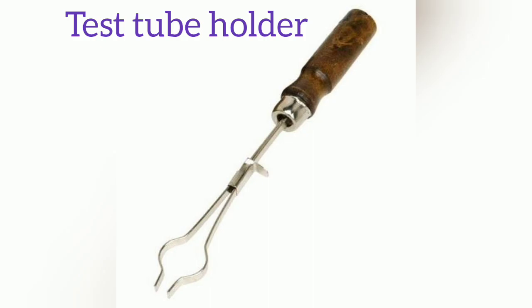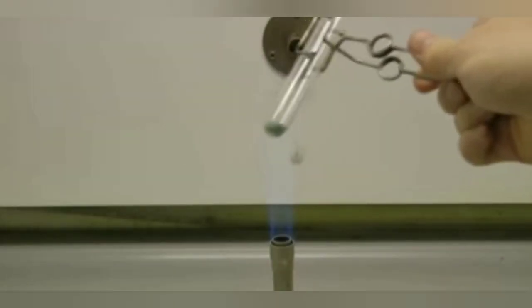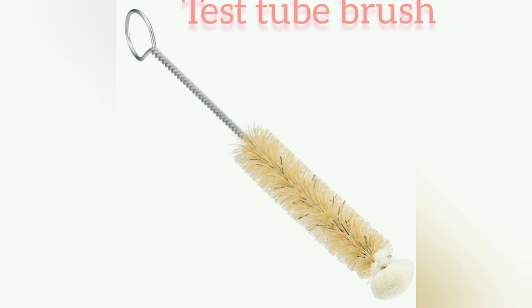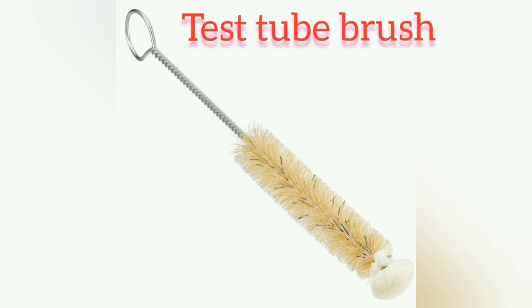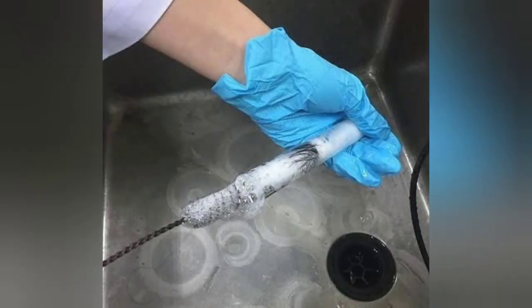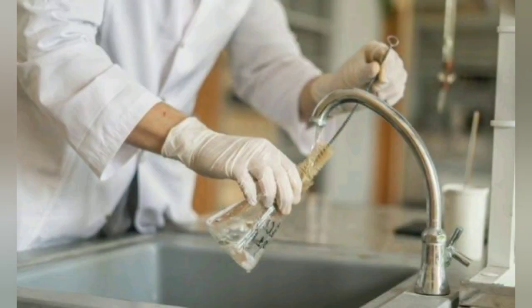A test tube holder is a metal strip with a wooden or plastic handle. It is mainly used for holding a test tube when it is being heated. A test tube brush is a coiled iron wire with plastic bristles. It is used to clean test tubes and other glassware such as flasks.